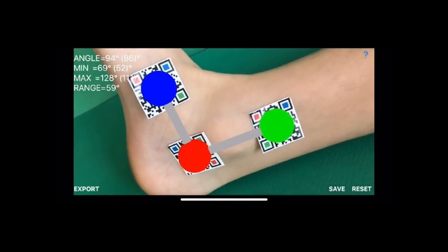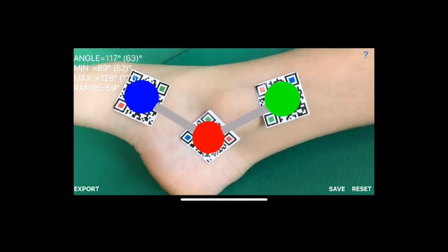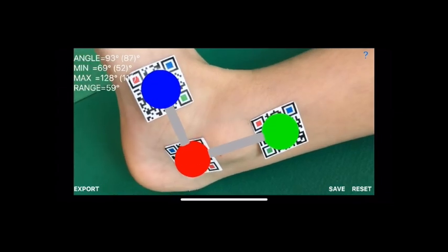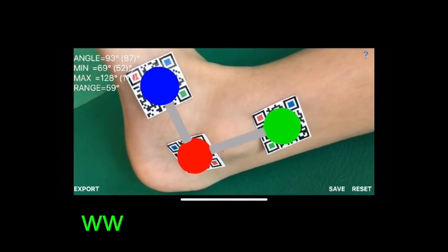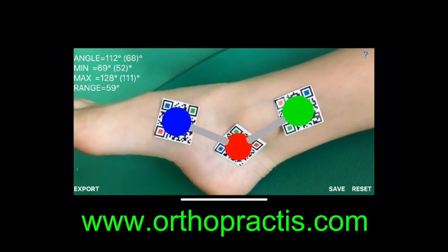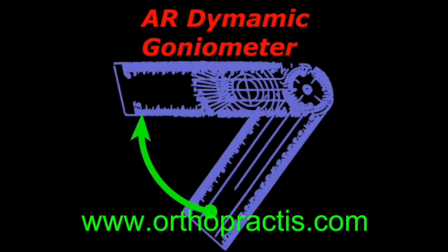All information received from the software output must be clinically reviewed regarding its plausibility before patient treatment. The dynamic goniometer AR app is indicated for assisting healthcare professionals. Clinical judgment and experience are required to properly use the software. The software is not for primary image interpretation.